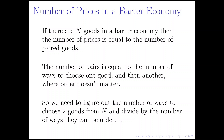So the question is, how many different prices would there be for all these pairs of goods in a barter economy where there's N goods? The number of prices would be equal to the number of pairs of goods.